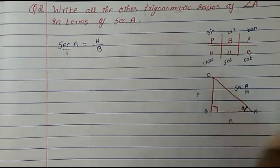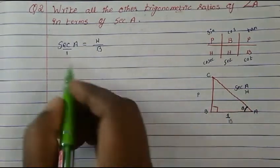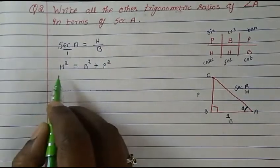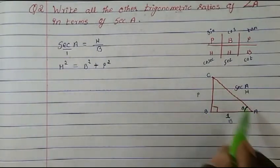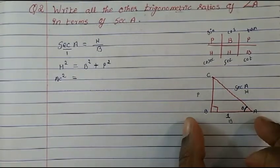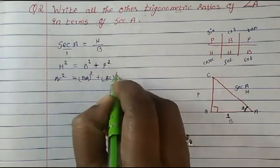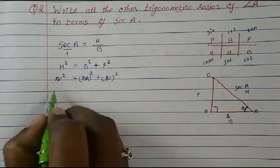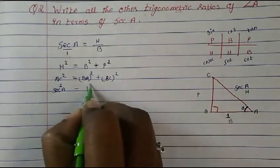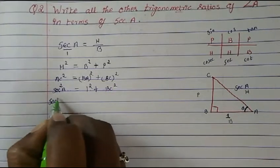So hypotenuse AC is sec A and base BA is 1. We need to find the perpendicular BC, so we use the Pythagorean theorem: hypotenuse² = base² + perpendicular². So AC² = BA² + BC², which gives sec²A = 1² + BC².